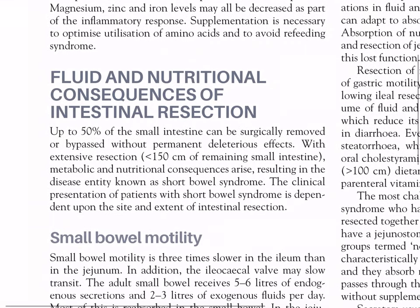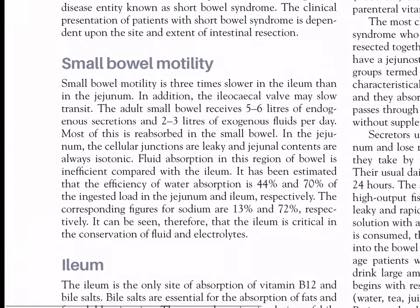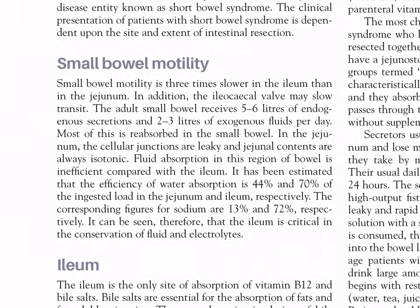Fluid and nutritional consequences of intestinal resection: up to 50% of the small intestine can be surgically removed or bypassed without permanent deleterious effects. With extensive resection leaving less than 150 cm of remaining small intestine, metabolic and nutritional consequences arise, resulting in the disease entity known as short bowel syndrome. Small bowel motility is three times slower in the ileum than in the jejunum; additionally, the ileocecal valve may slow transit. The adult small bowel receives 5–6 liters of endogenous secretions and 2–3 liters of exogenous fluids per day, most of which is reabsorbed in the small bowel.